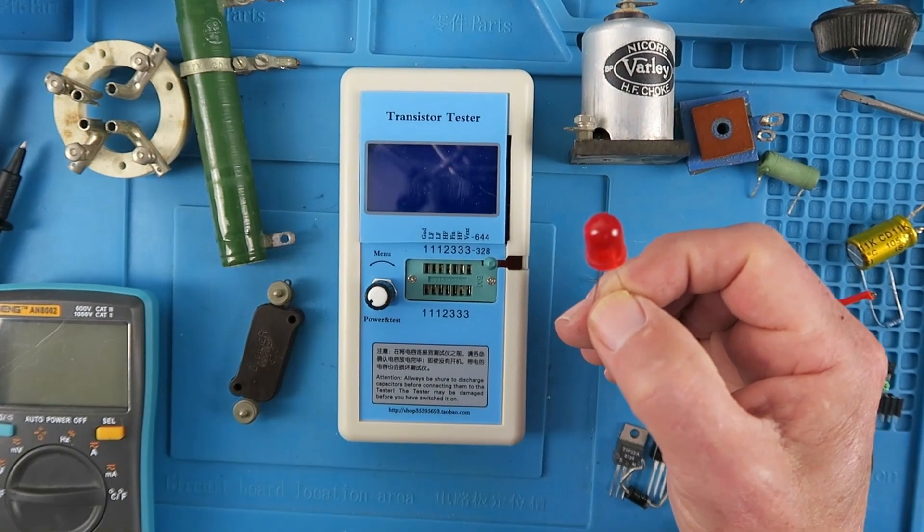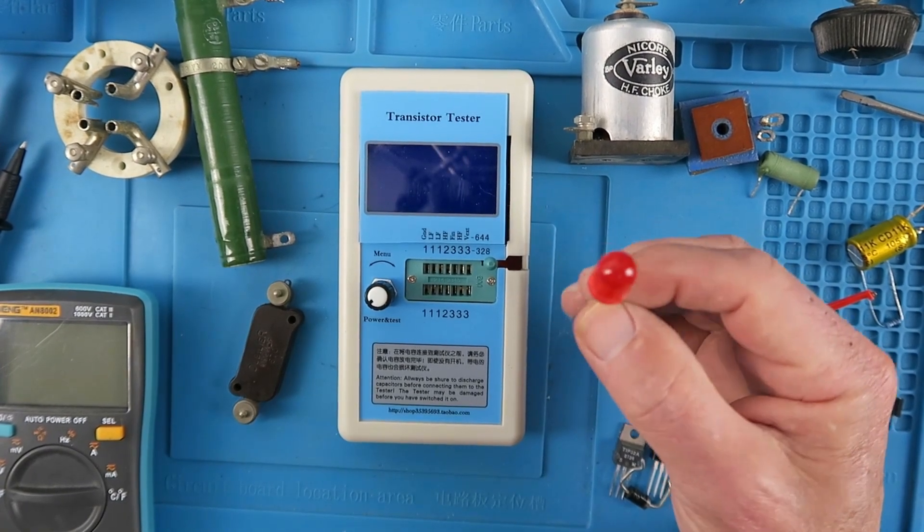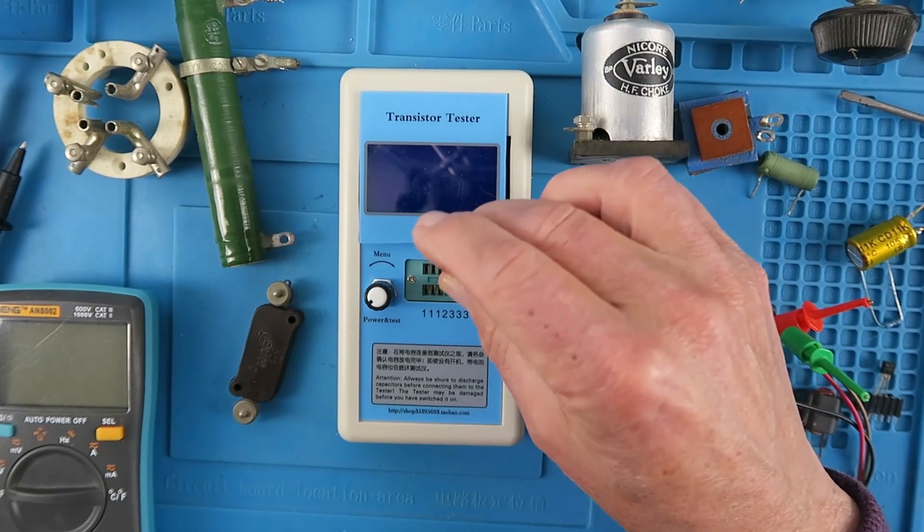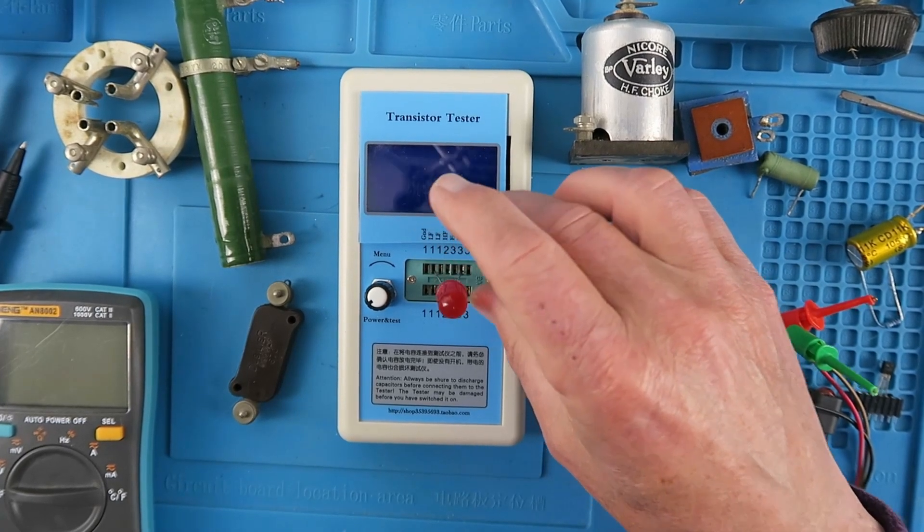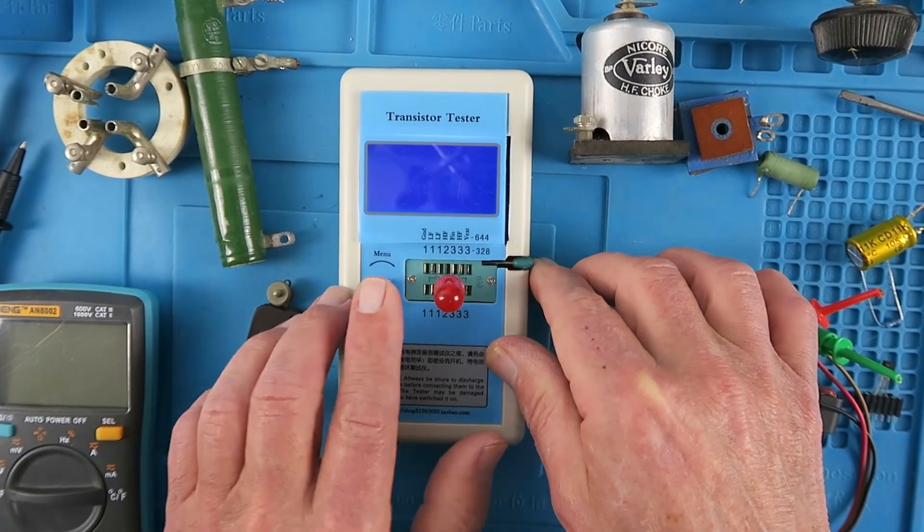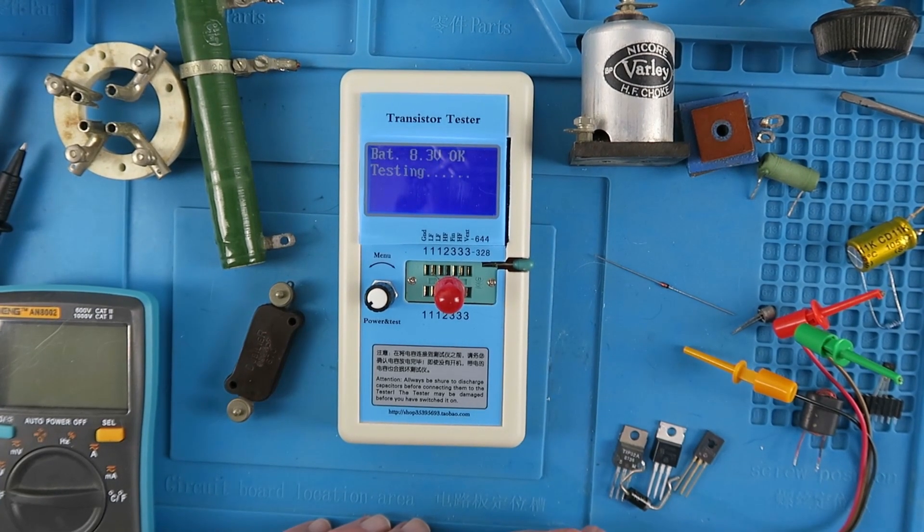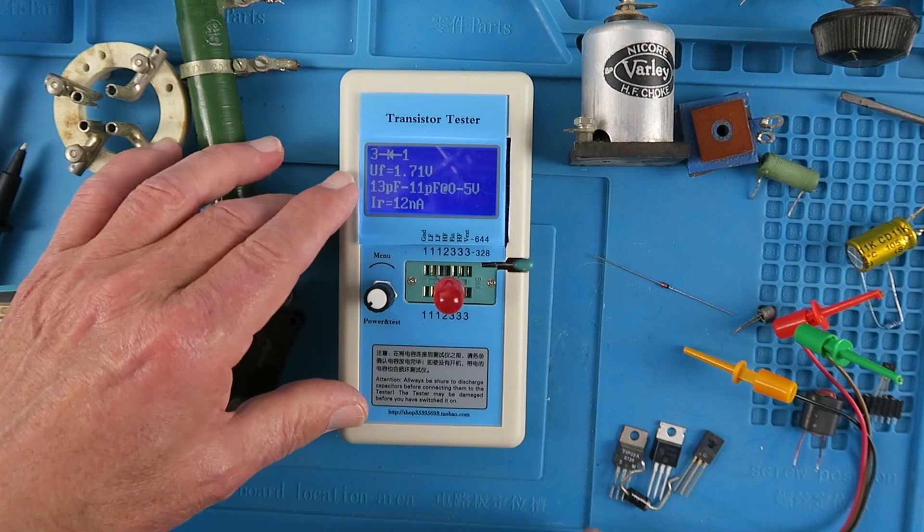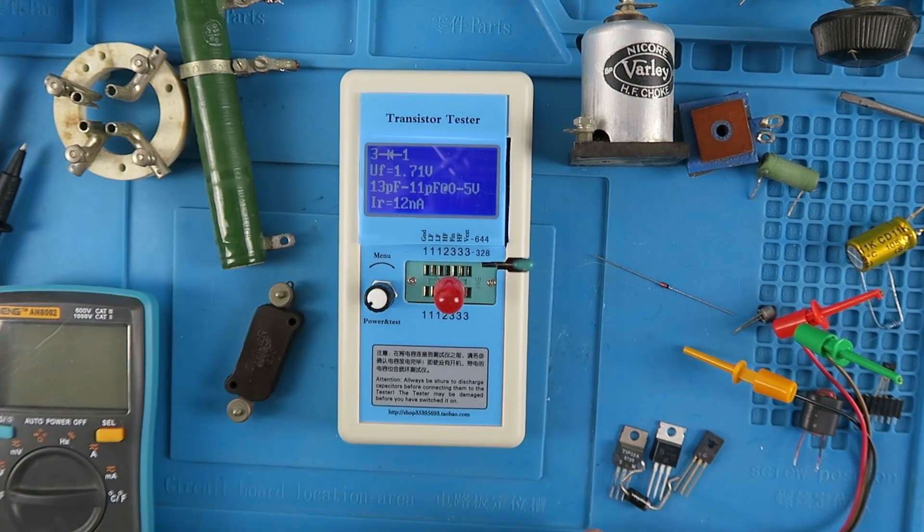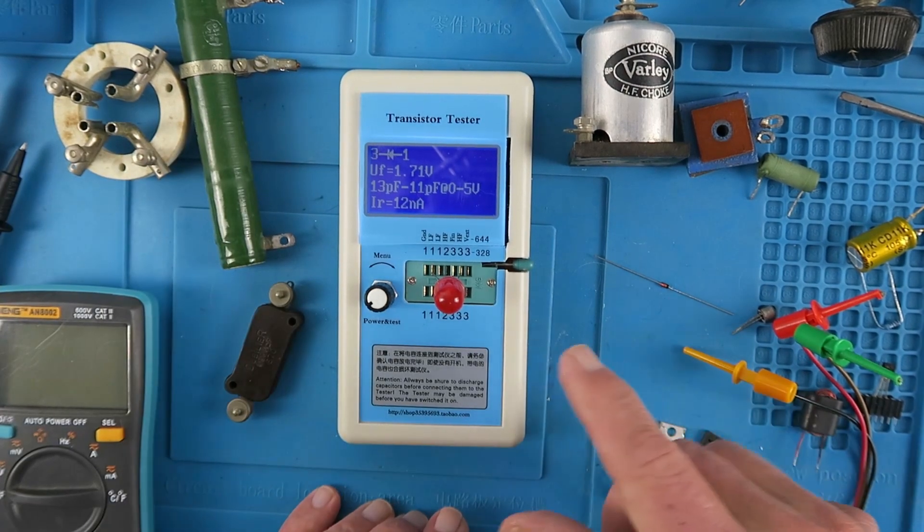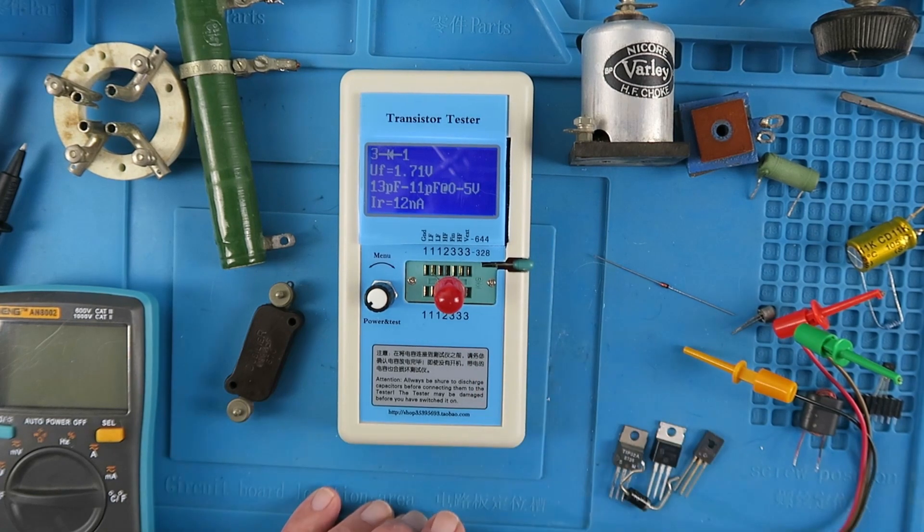Let's turn our attention for a moment to light emitting diodes. Now the tester proves especially useful as it will indicate to you the working voltage that you need. So here we can see the forward voltage 1.7 volts. So many times, personally, I pull LEDs and things from old equipment and you're not sure what the forward voltage is going to be. Here it clearly shows you.